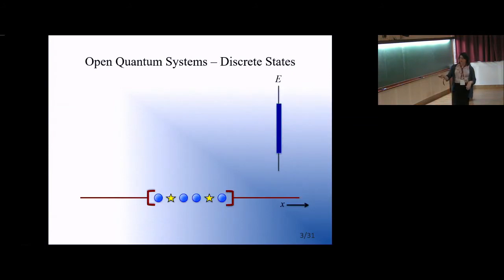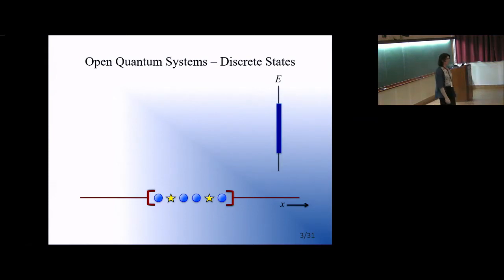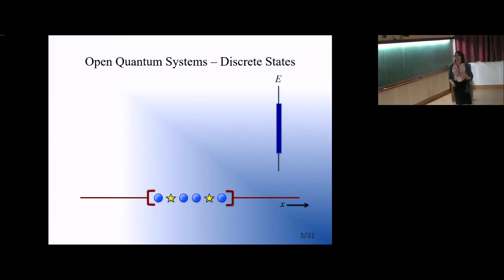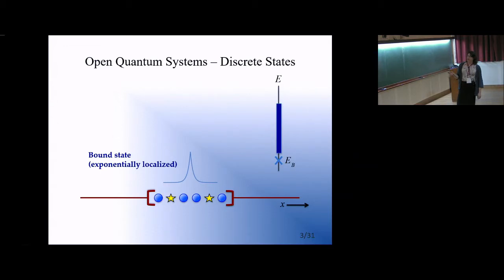Here I've drawn a simple abstract idea of a one-dimensional open quantum system. We have some discrete system — some atoms or molecules — interacting with some kind of environment, which is associated with the energy continuum. The interaction between these two systems can result in a myriad of things. In our eigenvalue spectrum we can have solutions like a bound state, which is exponentially localized in the discrete region. The energy of the bound state appears outside of the continuum.